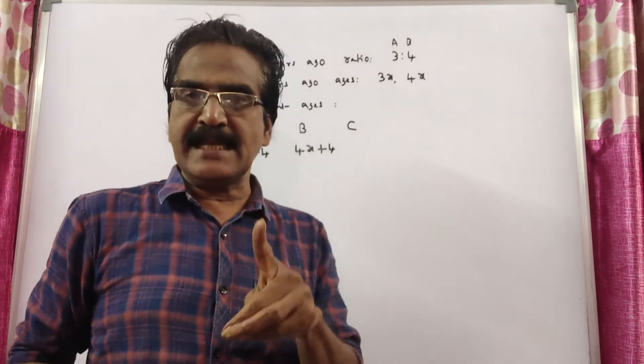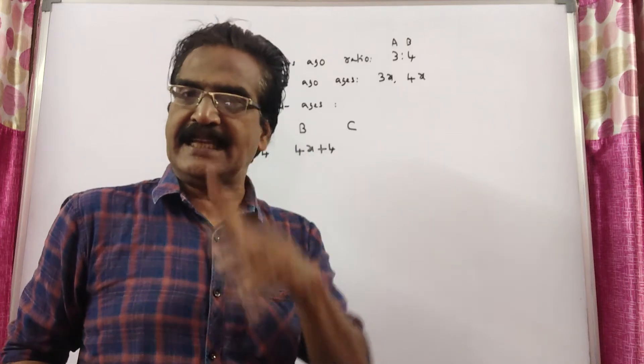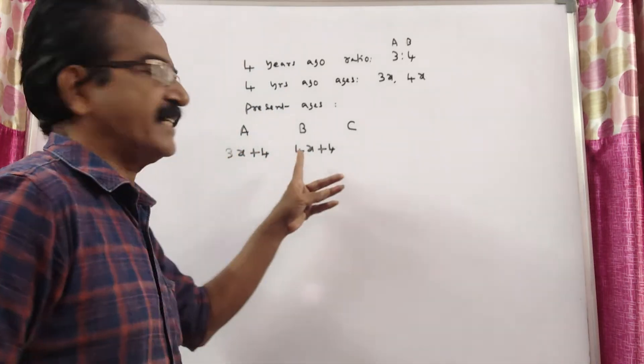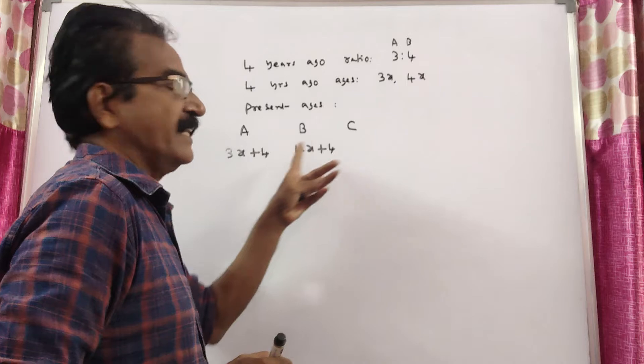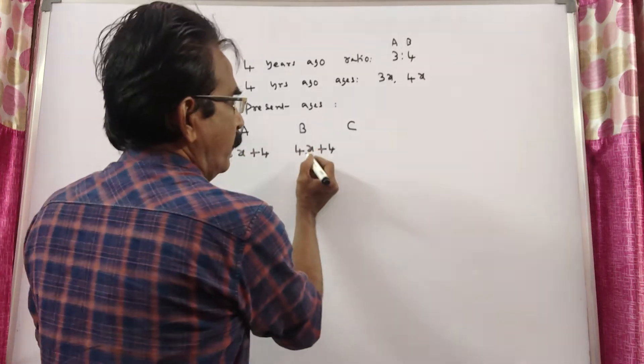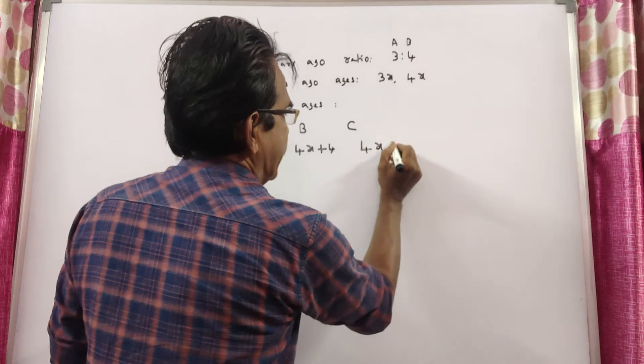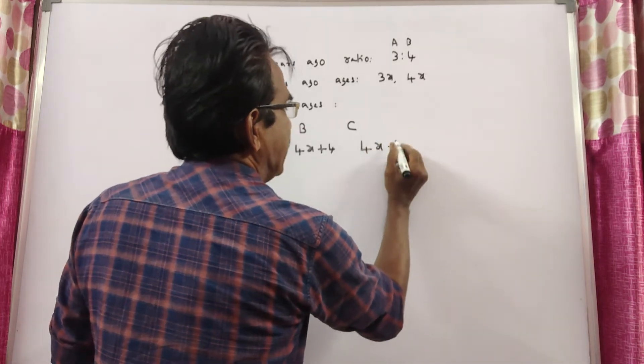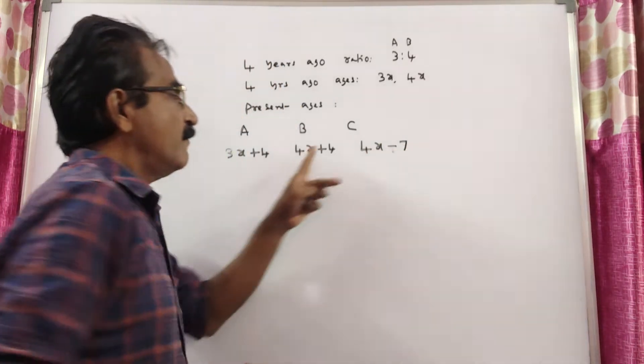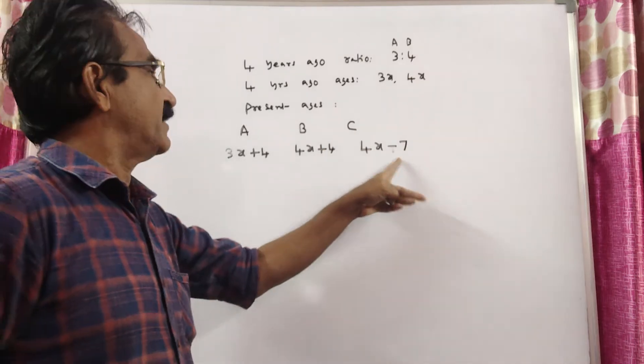And given that C is 11 years younger than B. That is C is 11 years smaller than B. 4x plus 4 minus 11. That is equal to 4x minus 7. 4 minus 11 is minus 7.